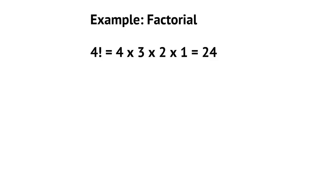But we can also define 4 factorial recursively by breaking it into a smaller problem of the same form. We can say 4 factorial is simply 4 times 3 factorial. So we've created a recursive part — this smaller form of our original problem — where we wanted to calculate 4 factorial.